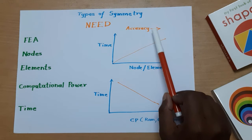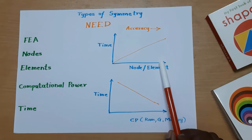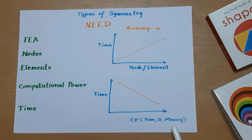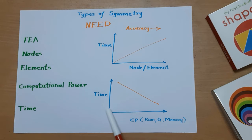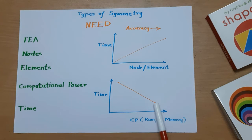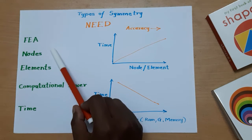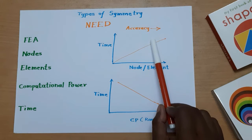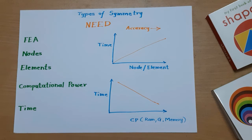Accuracy is very good when the number of nodes is high. Now looking at computational power — RAM, graphics card, and memory. If we have low RAM or low computational power, the time required for solving is more. With good RAM and good configuration, solving time is very less. So we want to get the solution done in less time with higher accuracy, and that is where types of symmetry come in.